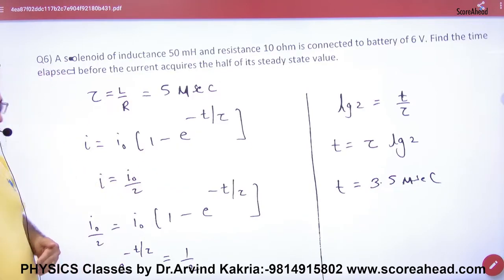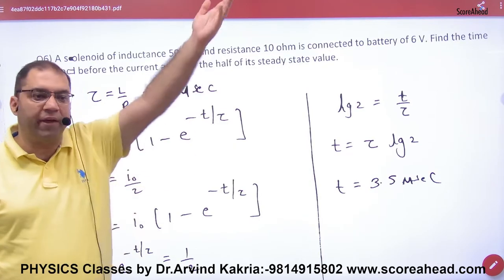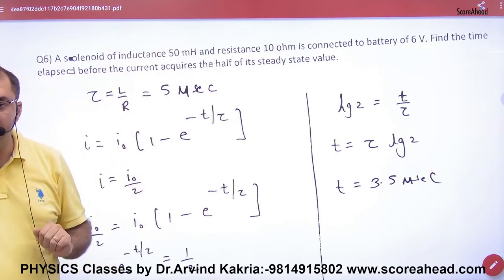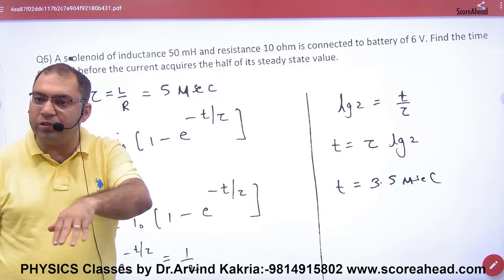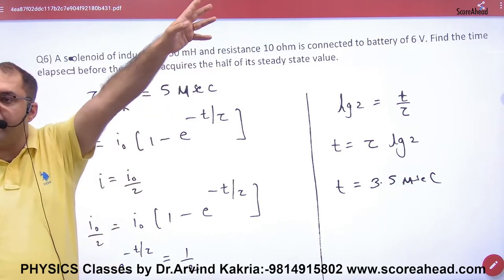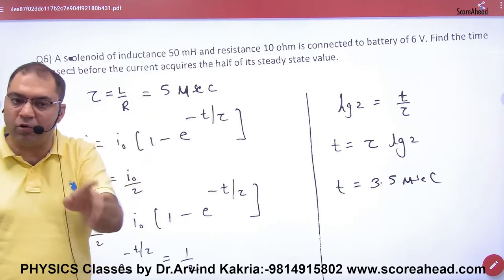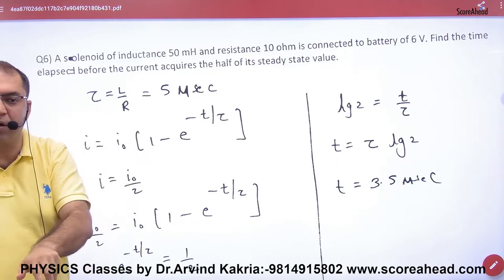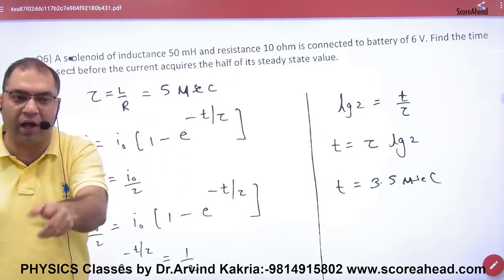So what will the steady value of current be? When the current is at its maximum, that is the steady value. Half of that steady value is I₀/2.